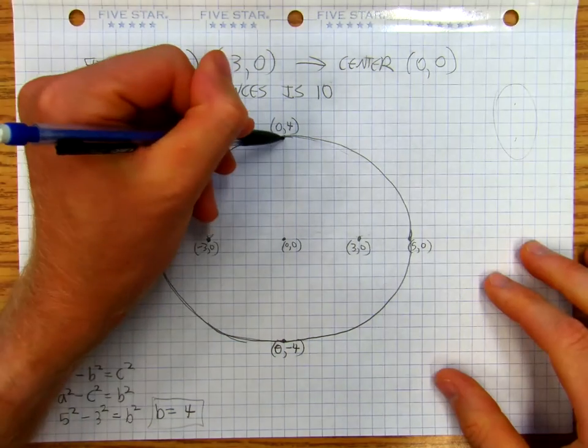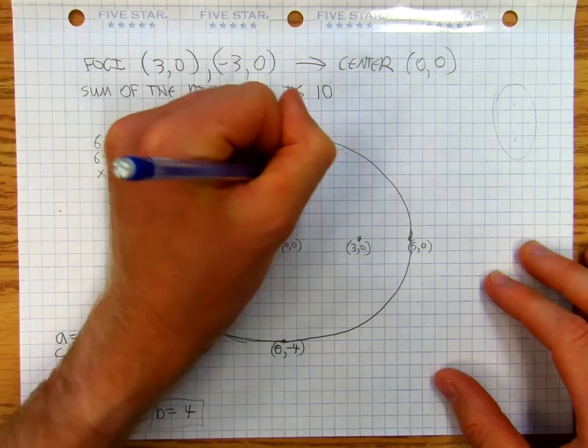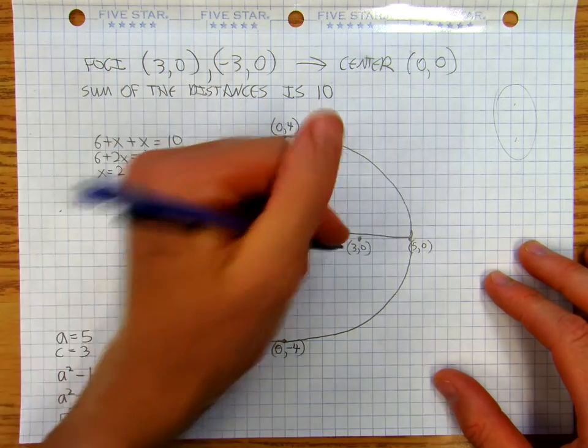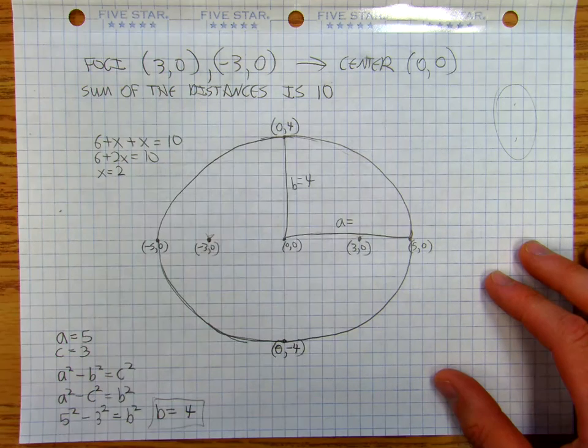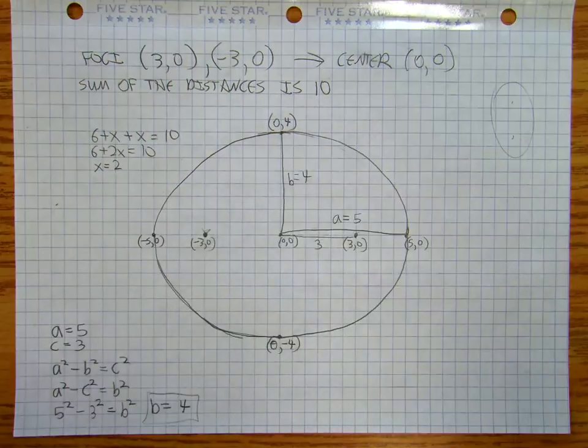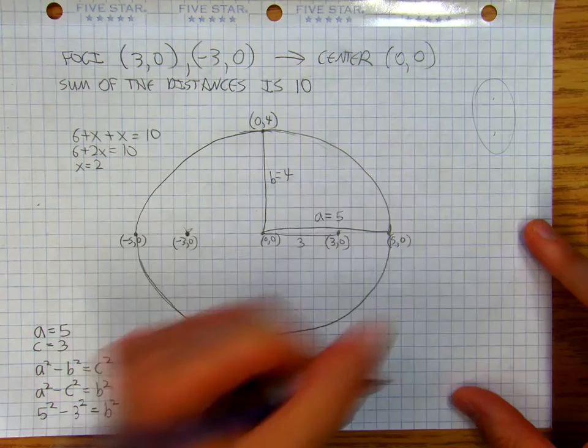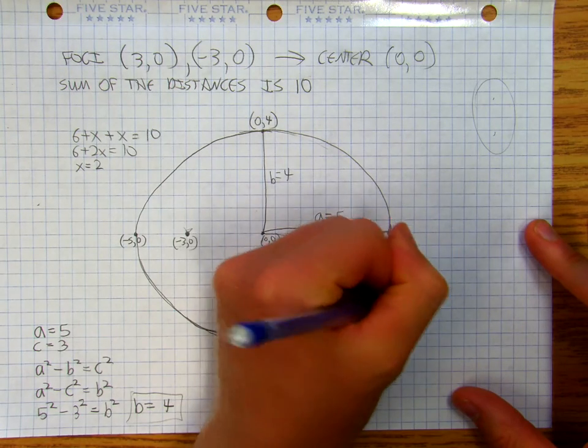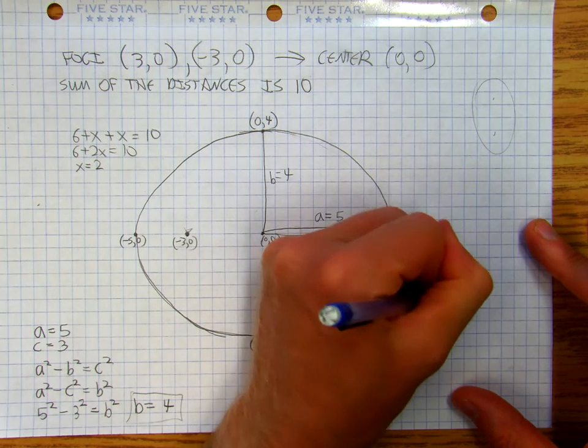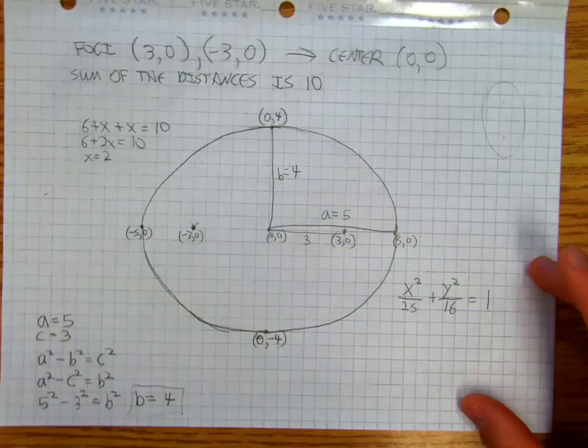And so you've got a semi-major axis, b is equal to 4. You've got a semi-minor axis, b equals to 4. Semi-major axis is equal to 5. And your focal length is equal to 3. And so then the equation for this is going to be x squared over 25 plus y squared over 16 is equal to 1. So, okay.